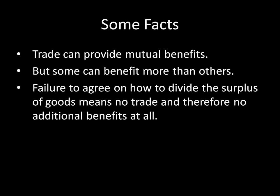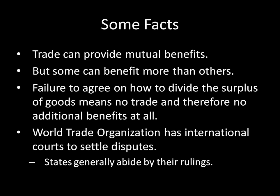How are we going to do that? One way the international system has come up with is to have international courts. Specifically, the World Trade Organization — the world's biggest trade organization — has these sorts of international courts that settle disputes. If two parties are in a dispute, they come to the court, make an argument, the court makes a ruling, and what's interesting is that states will generally abide by the WTO court's rulings.